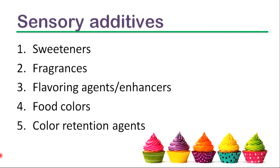The third food additive type is sensory additives. They are used to give good taste, appearance, and smell to foods. They include sweeteners, fragrances, flavoring agents or enhancers, food colors, and color retention agents.